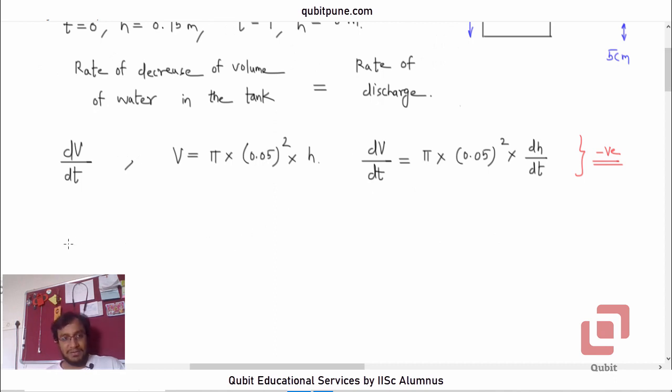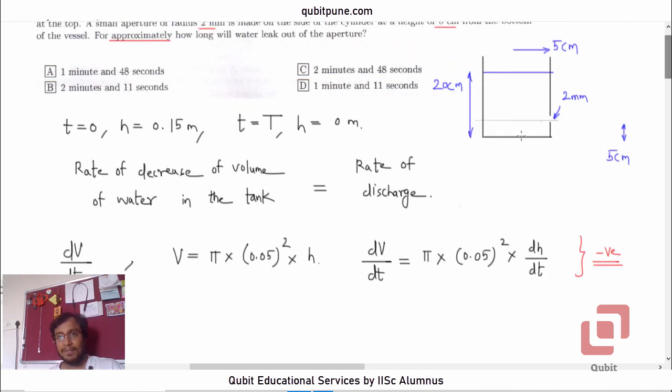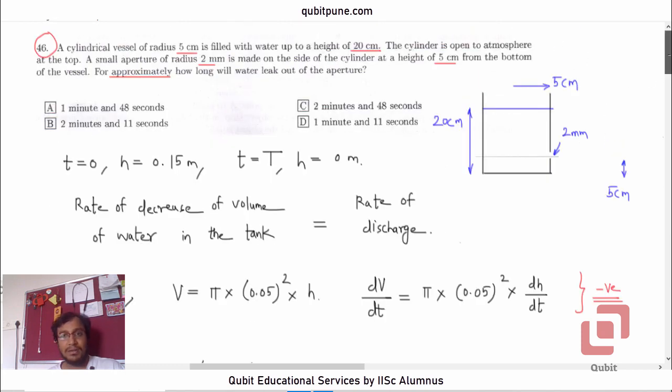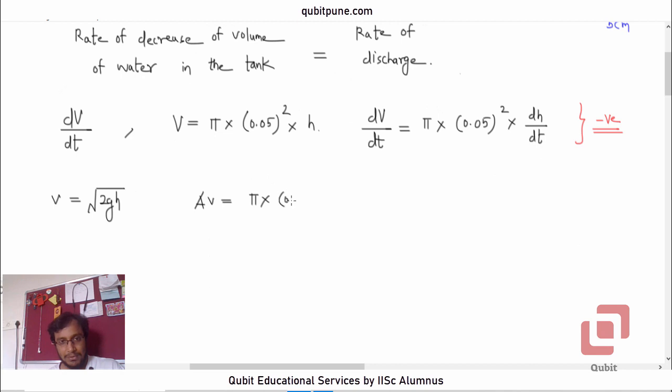And what is the rate of discharge? To calculate the rate of discharge, we will use Torricelli's formula, which is v = √(2gh). What is the rate of discharge? It is area of cross section of the aperture or orifice into the velocity or speed of the water with which it emerges out. So this is equal to Av, which is π × (0.002)² × √(2gh).